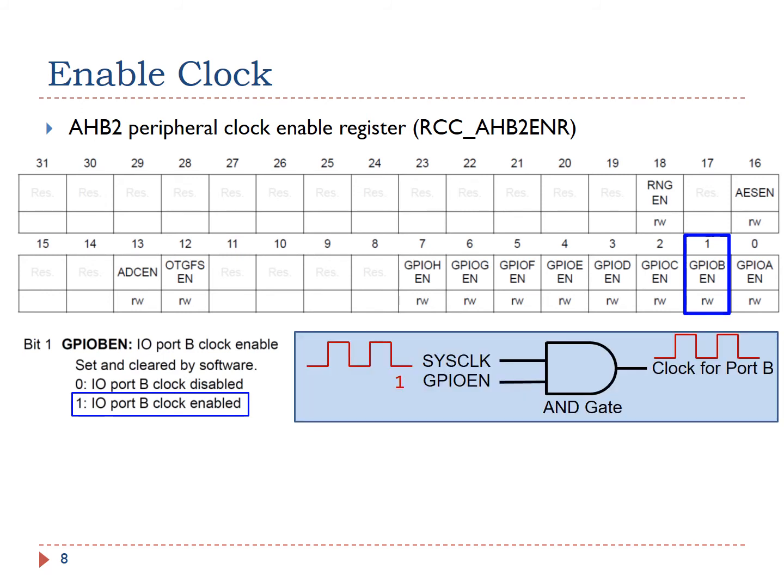When GPIO B enable bit is 1, the clock signal can pass through this logic and gate to drive the port B. On the other hand, if GPIO B enable it is 0, the output of the logic and gate is always 0. Accordingly, the port B has no clock input.